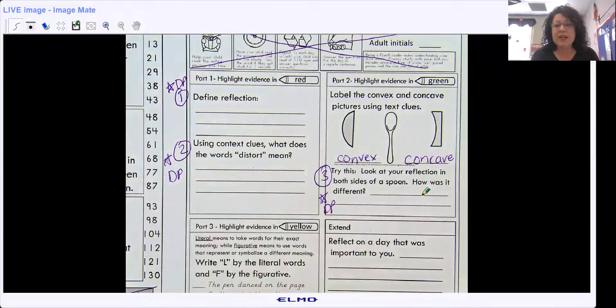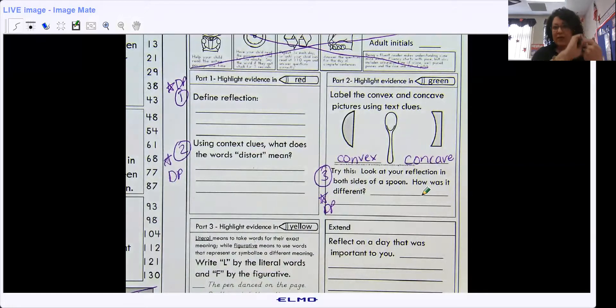And look at your reflection in both sides of a spoon. How is it different? So look when the spoon part goes in, and then turn the spoon and then look where the convex side where it puffs out. I want to use a big spoon.